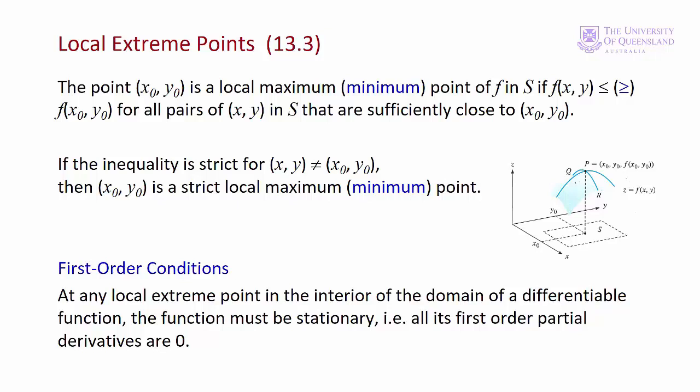The non-strict inequalities here are there because we could have something like, in the case of a local maximum, a plateau — a flat spot that's higher than its surroundings. In that case, we'd have multiple points that are at local maxima. It's more usual that we'll find strict local extreme points. This brings us to the first-order conditions. All of the first-order partial derivatives are 0 at a local extreme point. In other words, a local extreme point must be a stationary point. But the reverse is not necessarily the case. Hence, the first-order conditions are necessary but not sufficient conditions.